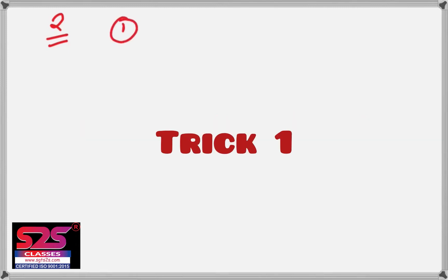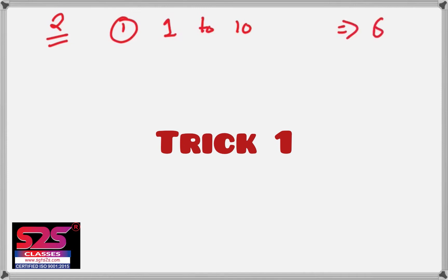In the first trick, I'll tell you to pick any whole number between 1 to 10. Before doing anything, I'll let you know that after a few calculations which I'll be telling you to do, your final answer will be 6. You can see that no matter what number you take, after following the steps, your answer will be 6.